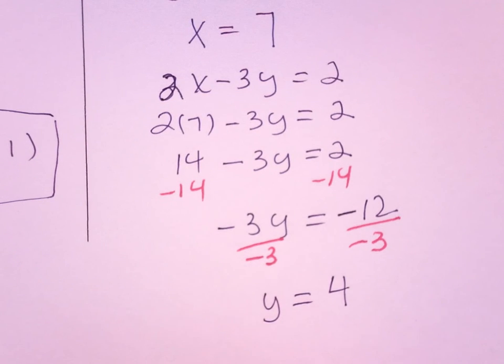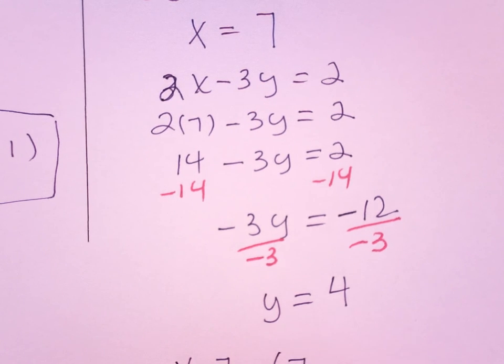So we have two answers, not two answers. We have x equals 7, y equals 4, or the coordinate point (7, 4).